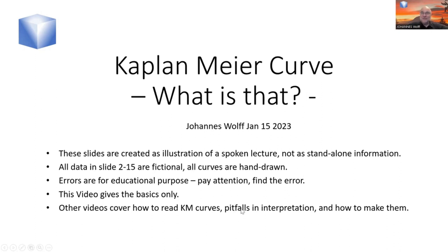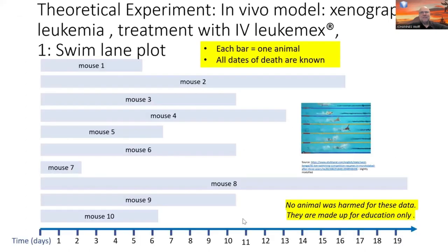So please pay attention and see if you find the error. This video only gives the basics of Kaplan-Meier curves; other videos show pitfalls of interpretation and how to make them. This is a theoretical experiment — an in vivo experiment. In vivo means intact organisms are used. Xenograft leukemia: xenograft means human cancer cells are implanted in an animal, and this is a leukemia model. We assume we have a treatment — it is intravenous, the drug cannot be swallowed, it needs to be given into the veins — and we call the drug Leukomax.